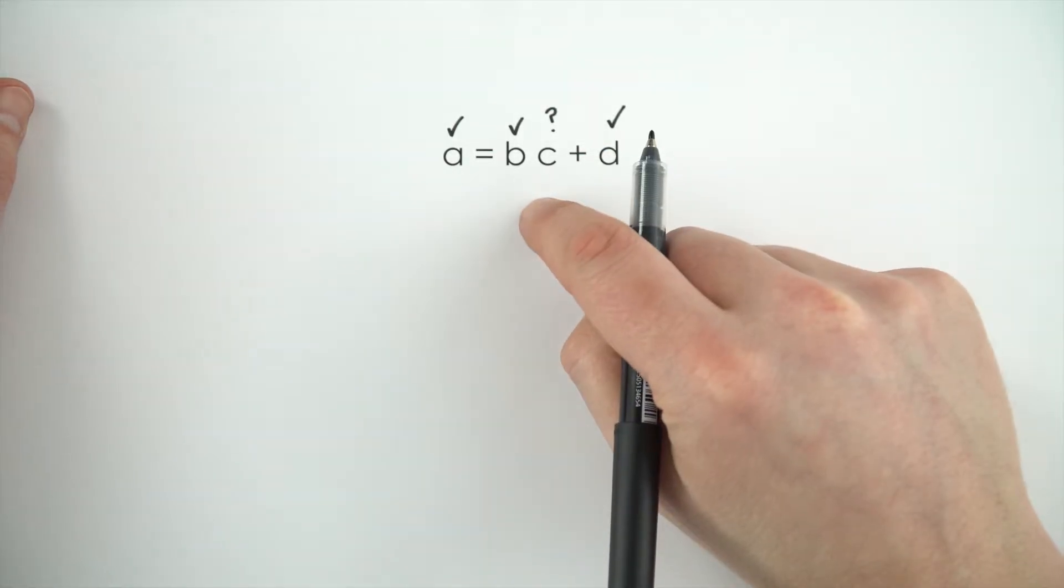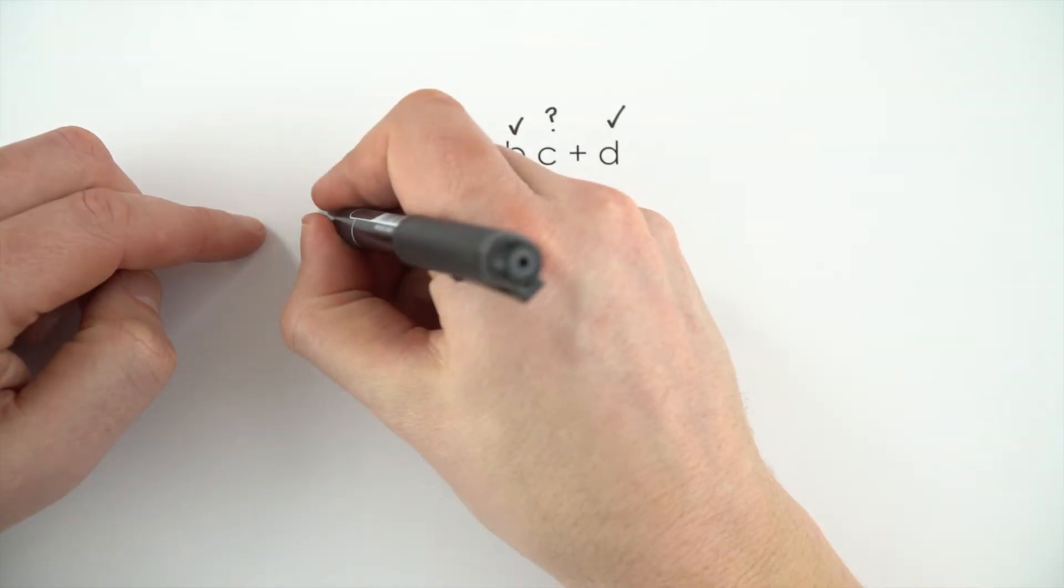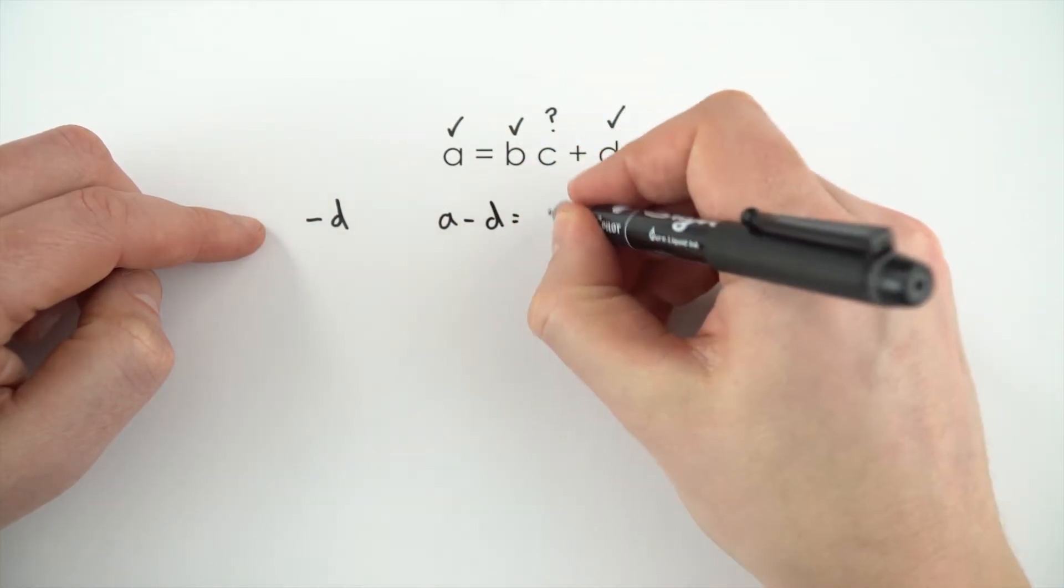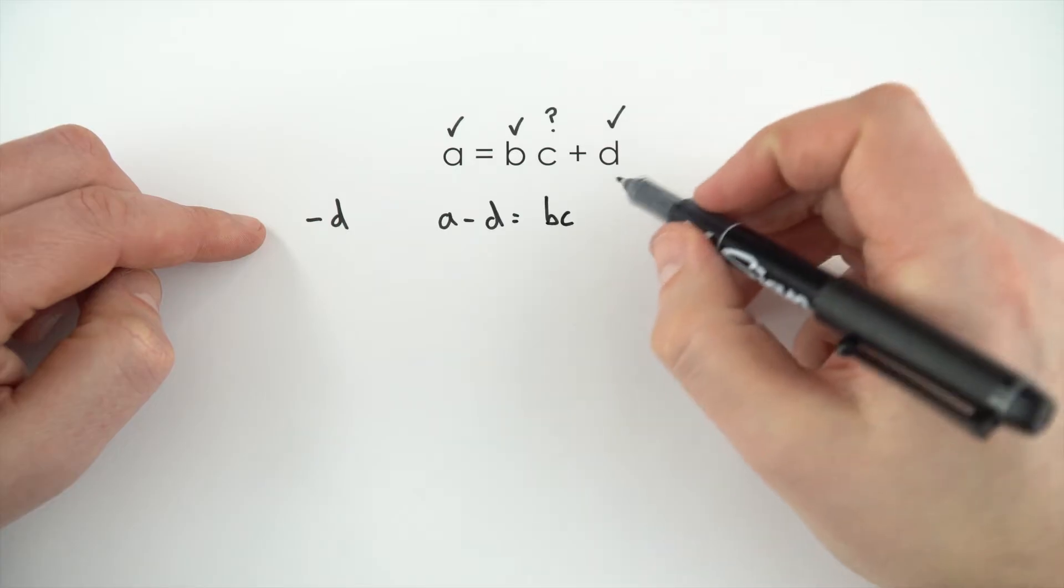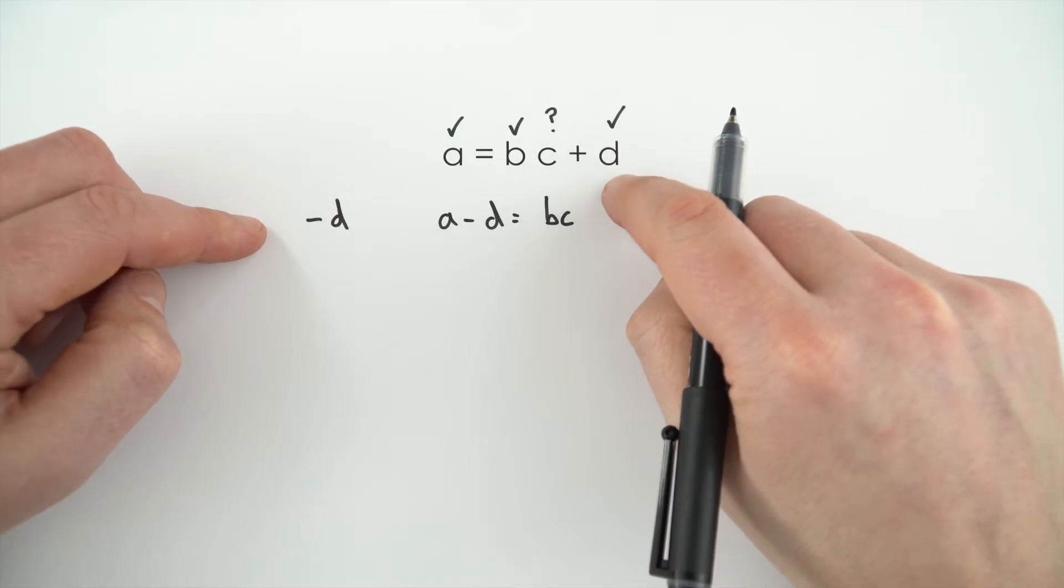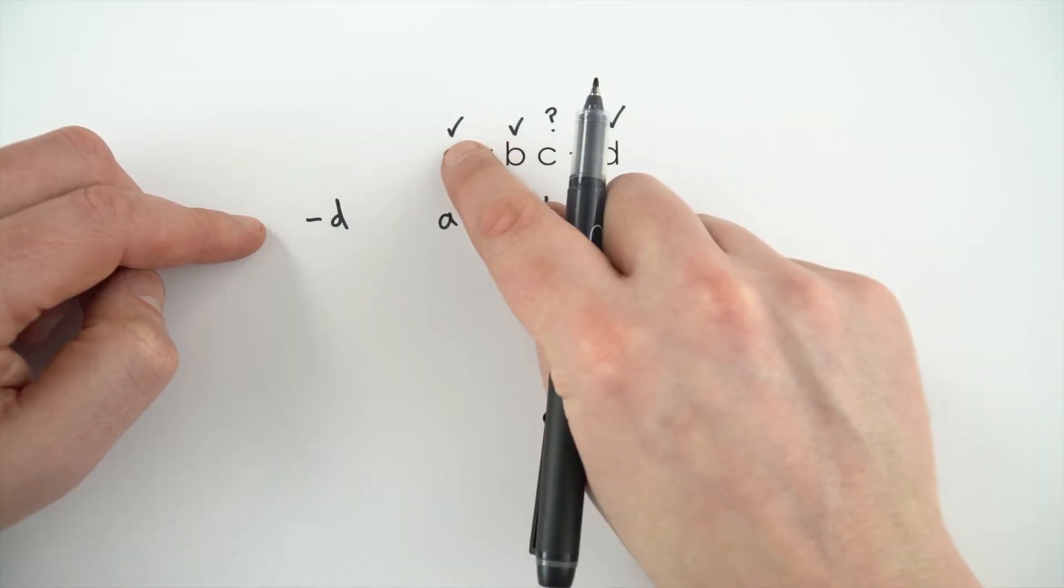So the first thing I'm going to do is I'm going to take d off both sides, I'm going to subtract d. So we can say that a minus d is equal to bc. Now I could put plus d minus d, a bit like I did in that previous example, but we're basically just taking this d from here to over here.